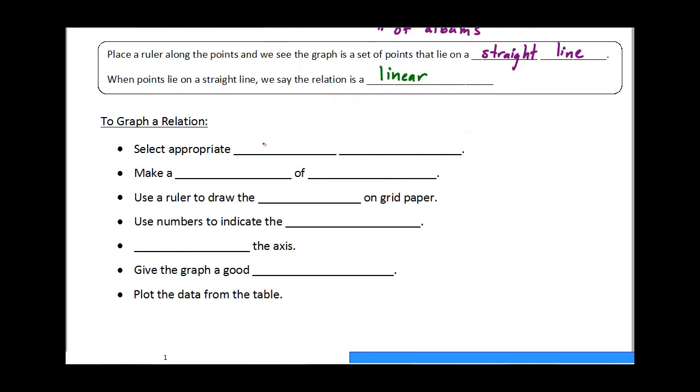Okay, so just to recap, we're going to select some appropriate input values. Remember that once we had the relation, we chose which values we want to put in—we chose easy ones like zero, one, two, three, four. Once you've got those input values, we're going to make a table of values, and then we're going to use a ruler to draw the axes on a set of grid paper—that's the x and y axes.